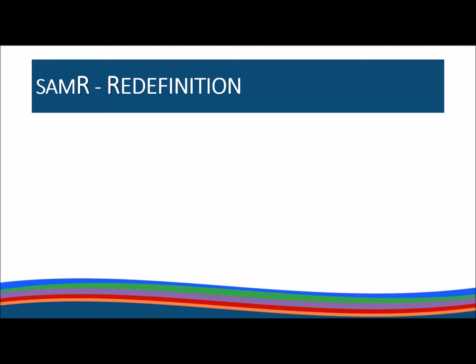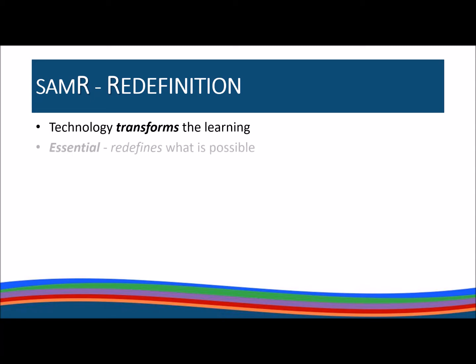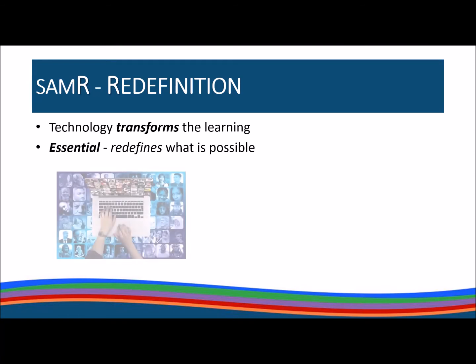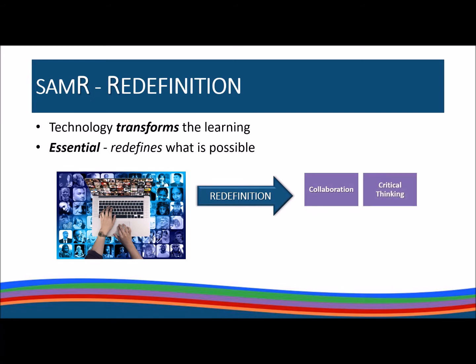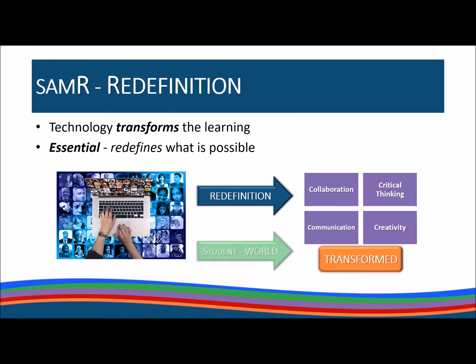The R in SAMR is the highest stage of integration: redefinition. This is when technology transforms the learning — it becomes essential as what is possible in the classroom is redefined in ways that would not be possible without technology. Students regularly participate in the four C's — collaboration, critical thinking, communication, and creativity — as they engage with and share content in new interactive ways, and learning becomes transformed as students connect to a world beyond their classroom.